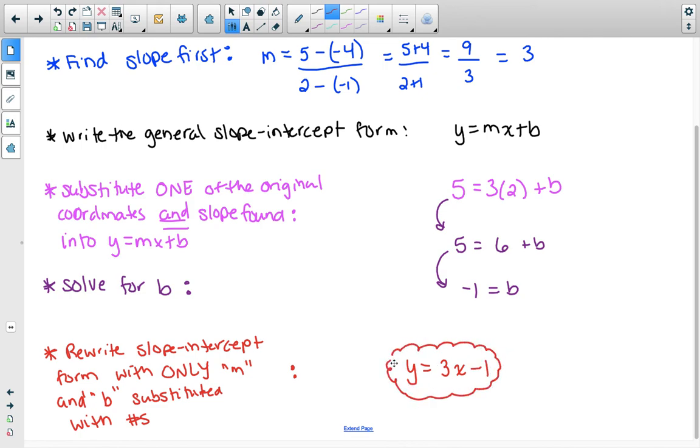This is slope-intercept form given the original two coordinates of negative 1, negative 4, and 2, 5. And if we were to graph this, both of those coordinates would be on that line.